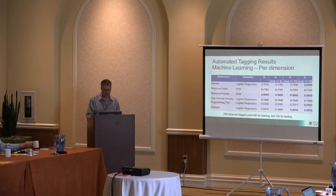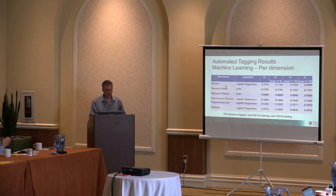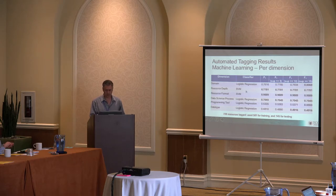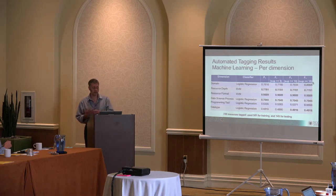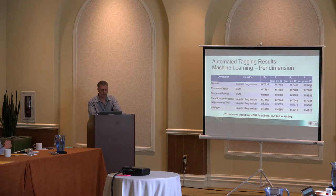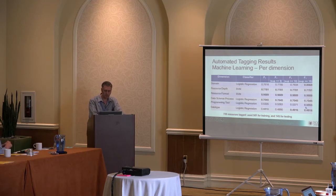In more precise experiments broken down by ontology dimension, with a hyperparameter search over different machine learning algorithms, we get an overall F1 of about 0.76, improving to 0.80 for concepts with more than 15 supporting resources. Some dimensions we predict quite well (up to 0.98) and some are still lagging — we're working on improving those results.